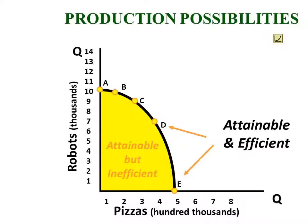What about this yellow area that's labeled 'attainable but inefficient'? Anywhere inside the curve represents inefficiency or underemployment of economic resources — unemployment or underemployment of economic resources. So inside the curve means we could be doing better; we could be having more pizzas and more robots. Society should be churning out more economic output, but unfortunately it is not. Typically, this is associated with a recession in the macroeconomic sense.